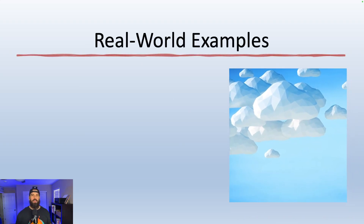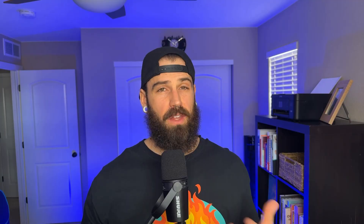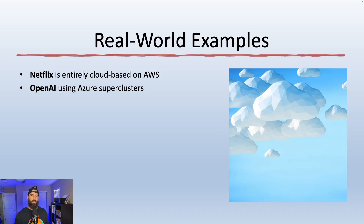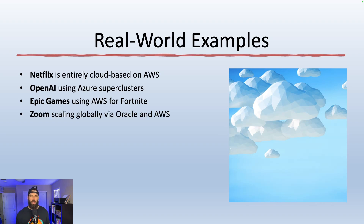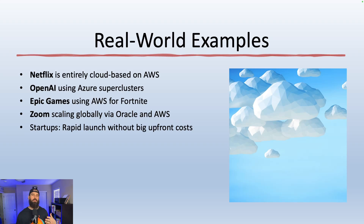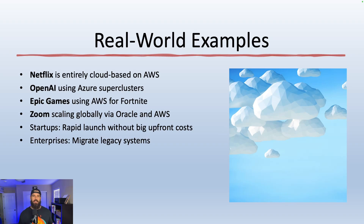What does this look like in the real world? Netflix runs entirely in the cloud using AWS, streaming to millions of people globally with near zero downtime. OpenAI uses Azure supercomputers to power ChatGPT and other large language models. Epic Games uses AWS to run Fortnite for a global player base. Zoom scaled its infrastructure virtually overnight during the pandemic using AWS and Oracle Cloud. Cloud computing also empowers startups to launch products faster without buying hardware, and allows enterprises to modernize legacy systems. Cloud-native platforms are essential for innovation, AI, automation, and scale.